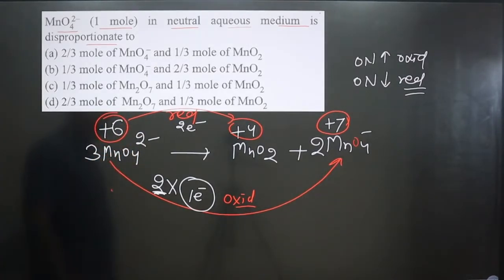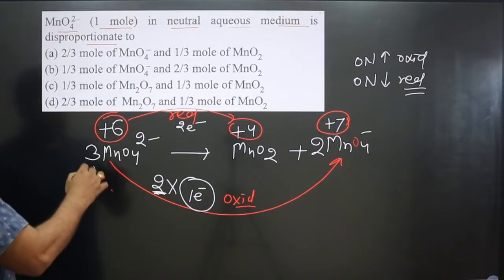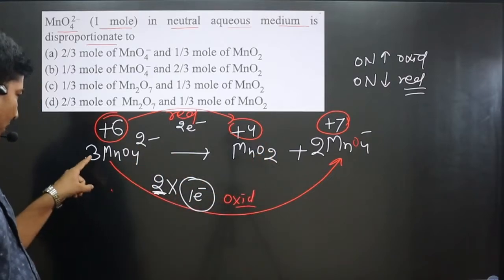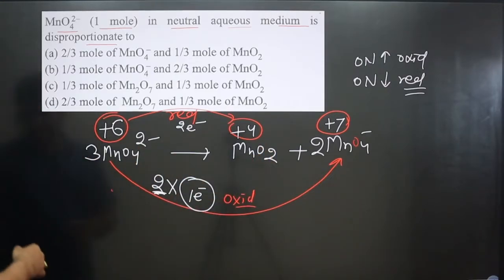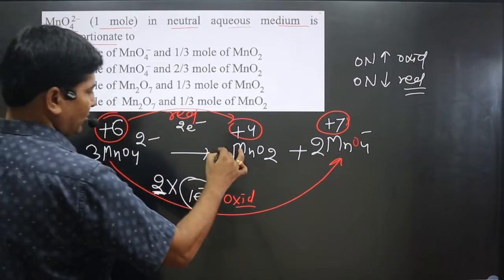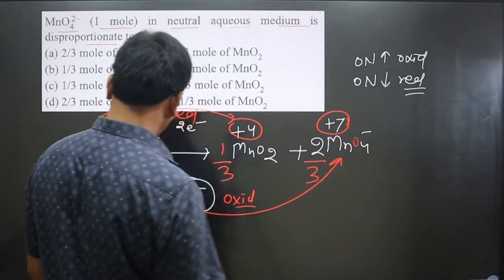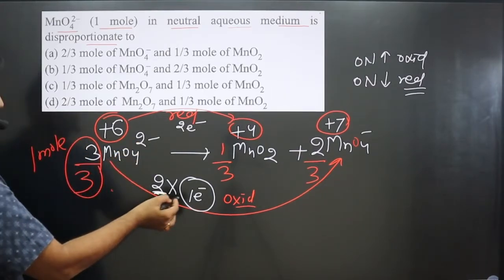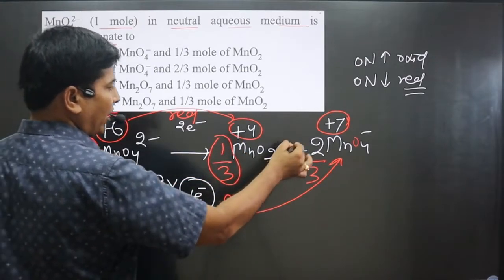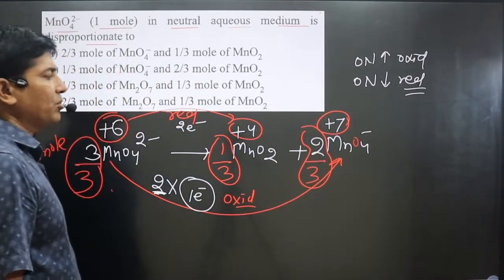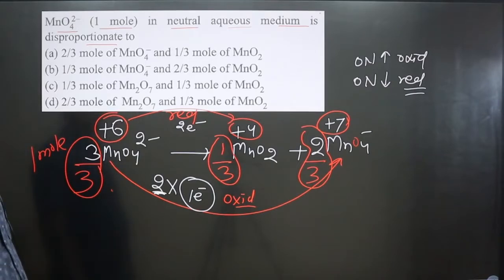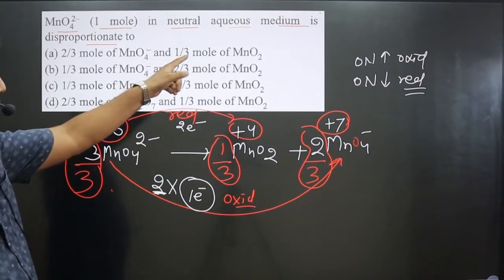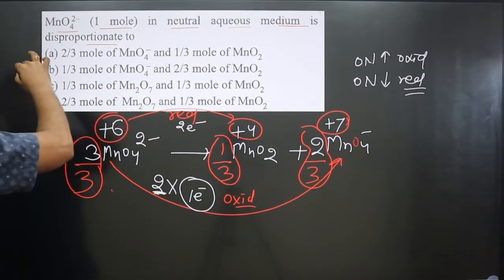We get three molecules total. Since the question asks for one mole, we divide the entire equation by three. So one mole of MnO₄²⁻ reacts to give one-third mole of MnO₂ and two-thirds mole of MnO₄⁻. Option A is the correct answer.